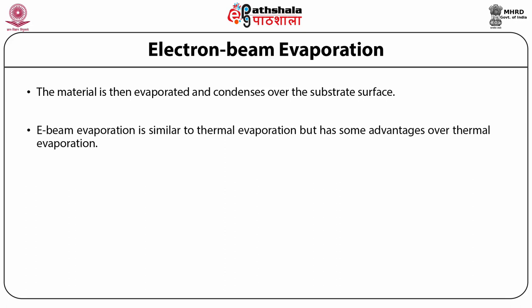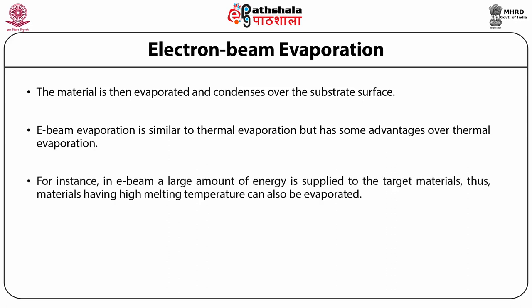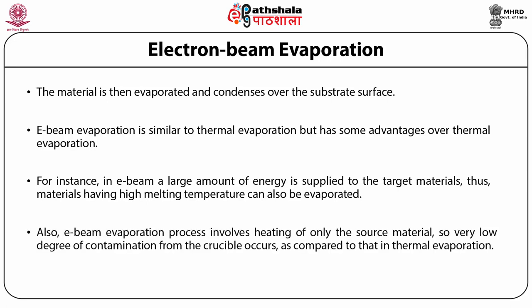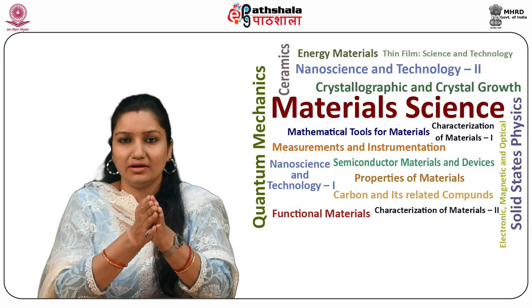E-beam evaporation is similar to thermal evaporation but has some advantages. A large amount of energy is supplied to the target material, so materials having high melting temperature can also be evaporated using this technique. Also, e-beam evaporation involves heating of only the source material, so a very low degree of contamination from the crucible occurs as compared to that in thermal evaporation.